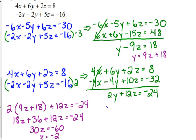It's very easy to solve for y now, because we've got y equals 9 times z, which is now negative 2. So, that's negative 18 plus 18, which is 0.